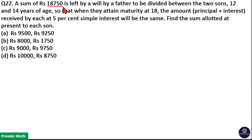A sum of Rs. 18,750 is left by a will by a father to be divided between two sons of 12 years and 14 years of age. So that when they attain maturity at 18 year, the amount that is principal plus interest received by each at 5% interest will be same. Find the sum allotted at present to each son.